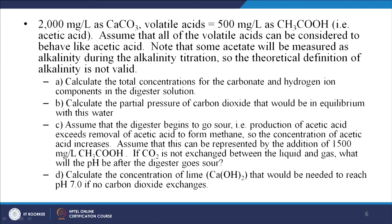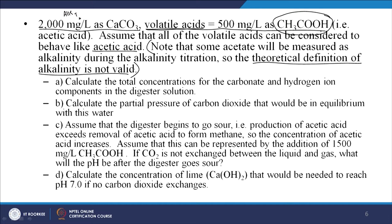Now let us look at the example — an anaerobic digester scenario. The alkalinity total is 2000 mg/L as CaCO₃, and volatile acids are 500 mg/L as acetic acid. Assume all volatile acids behave like acetic acid — a valid assumption here. Some acetate will be measured as alkalinity during the titration, so the theoretical definition of alkalinity is not valid here.